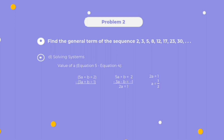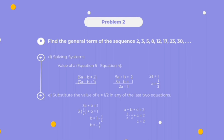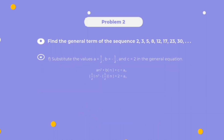Since 2a equals 1, we get a equals 1/2. To find b, we substitute a equals 1/2 into equation 4: 3 times 1/2 plus b equals 1, so b equals 1 minus 3/2, which gives b equals negative 1/2. Substituting into equation 1: 1/2 minus 1/2 plus c equals 2, so c equals 2. We then substitute a equals 1/2, b equals negative 1/2, and c equals 2 into the general equation: a sub n equals 1/2 n squared minus 1/2 n plus 2.